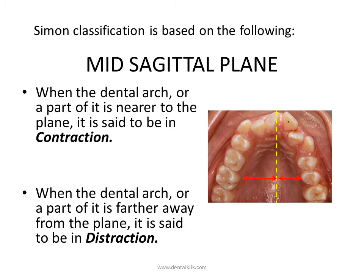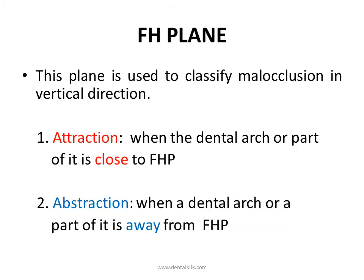In normal arch relationship, according to Simon, the Orbital Plane passes through the distal aspect of the canine. This is also called the Law of the Canine.